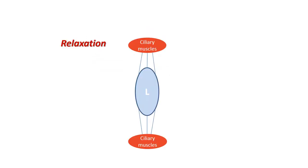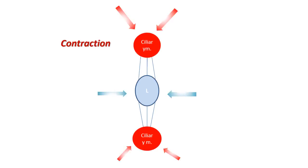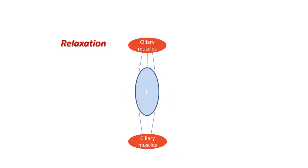This is done by a process called accommodation. Accommodation happens through the ciliary muscles attached to the lens. When the ciliary muscle is contracting, the lens becomes more convex, improving the focus for closer objects. When it relaxes, it flattens the lens, generally improving the focus for farther objects.